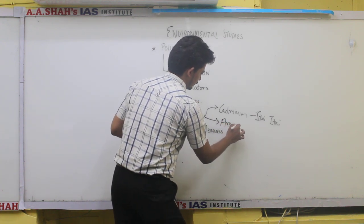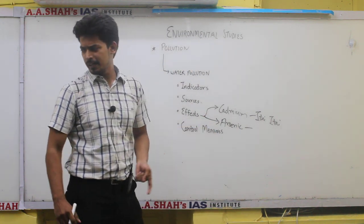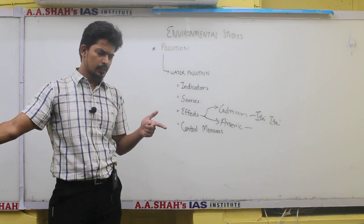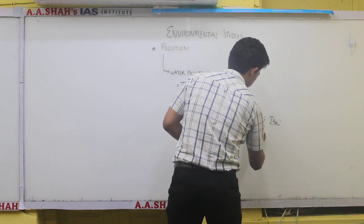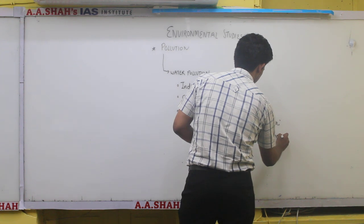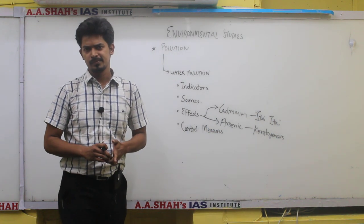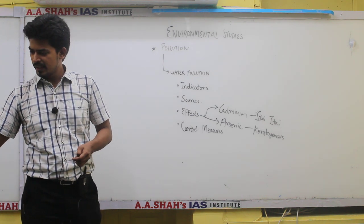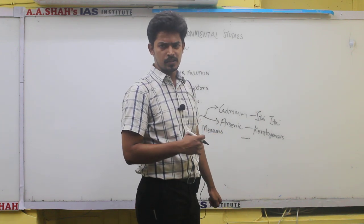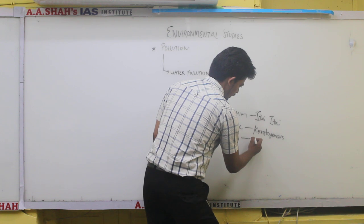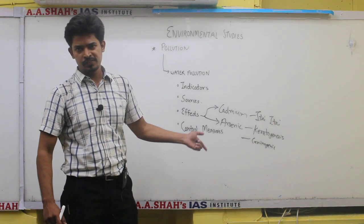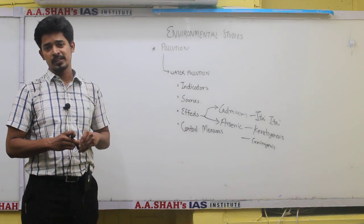Next is arsenic. Arsenic water contamination causes diseases like keratogenesis where skin becomes scaly. In this disease, people feel a lot of itchiness because of arsenic. Also, arsenic is carcinogenic - it is one of the most important causes of forming cancer.